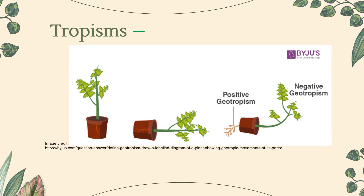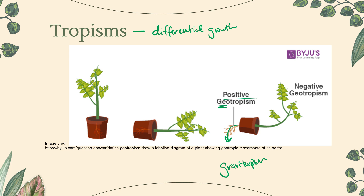Tropisms are responses to stimuli that result in differential growth — differential growth just means that one part of the plant is growing faster or more slowly than other parts of the plant. This is often seen in roots and shoots. We can have positive tropisms, such as geotropism, where the roots are growing toward gravity — we can also call this gravitropism. We can have negative geotropism or gravitropism, where the plant is growing away from gravity.